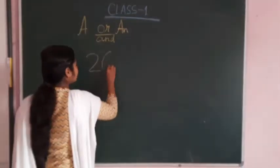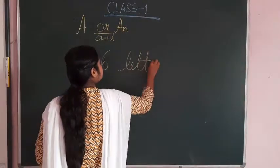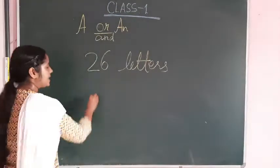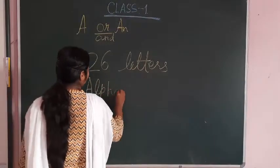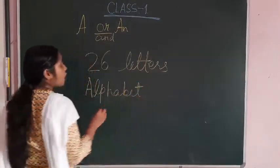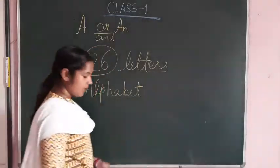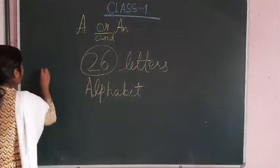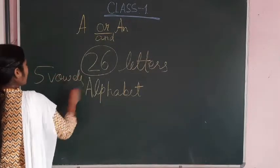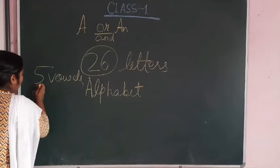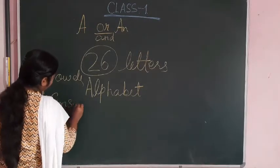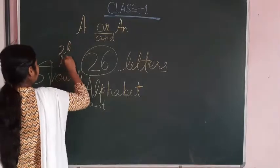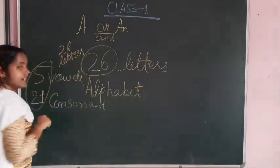There are 26 letters in the alphabet. What is alphabet? A, B, C, D, E, F, G till Z. That is alphabet. And how many letters are there? 26. Now there are 5 vowels and 21 consonants. As I told you, there are 5 vowels and 21 consonants. All together makes it 26 letters.